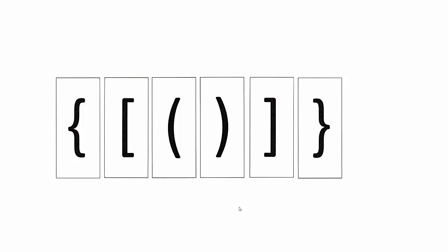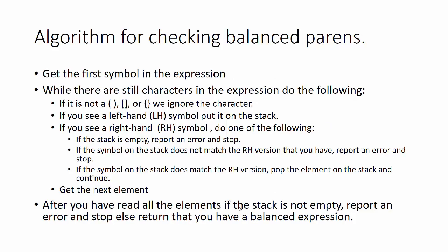How does a compiler or program actually check to see if an expression contains a balanced set? The algorithm looks like this: you get the first symbol, then enter a while loop. While there are still characters in the expression, if it's not a left or right parentheses, square brace, or curly brace, we ignore those characters. If you see a left-hand symbol, you put it on a stack.